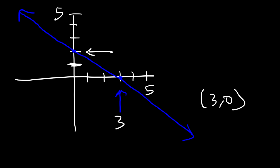The y-intercept occurs at a y-value of 2 — that's where the curve touches the y-axis. So that point is (0, 2): x is 0, but y is 2 at that point. So now you know how to find the x and y-intercepts from a graph. That's all you need to do.